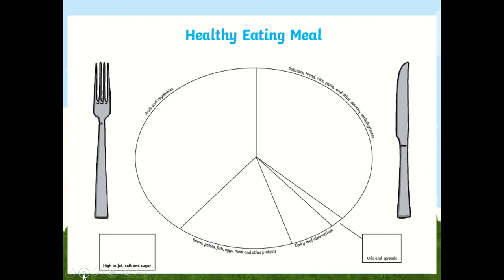I'm going to put this into the portfolio page. I want you to think about what would make a healthy balanced meal. The plate has been divided up for you, so you need — I'd say — two or three portions of fruit and veg, two portions of carbs, one portion of protein, one portion of dairy, and then a little bit of oils and spreads.